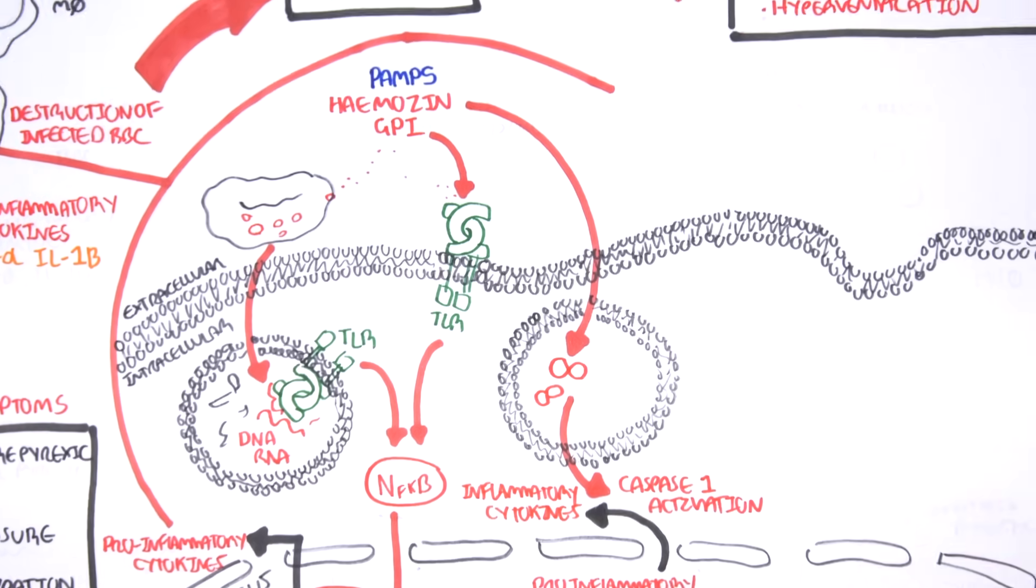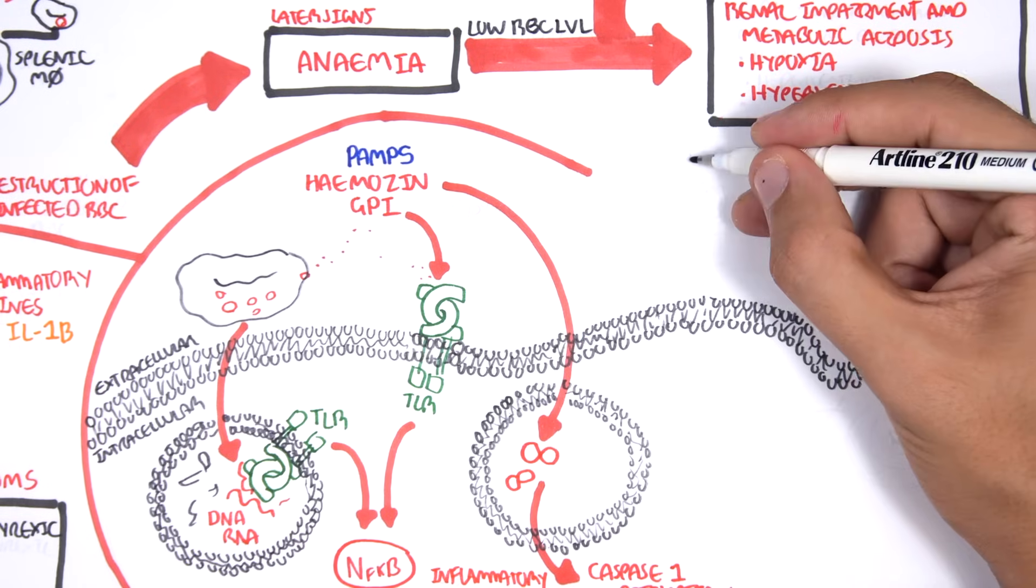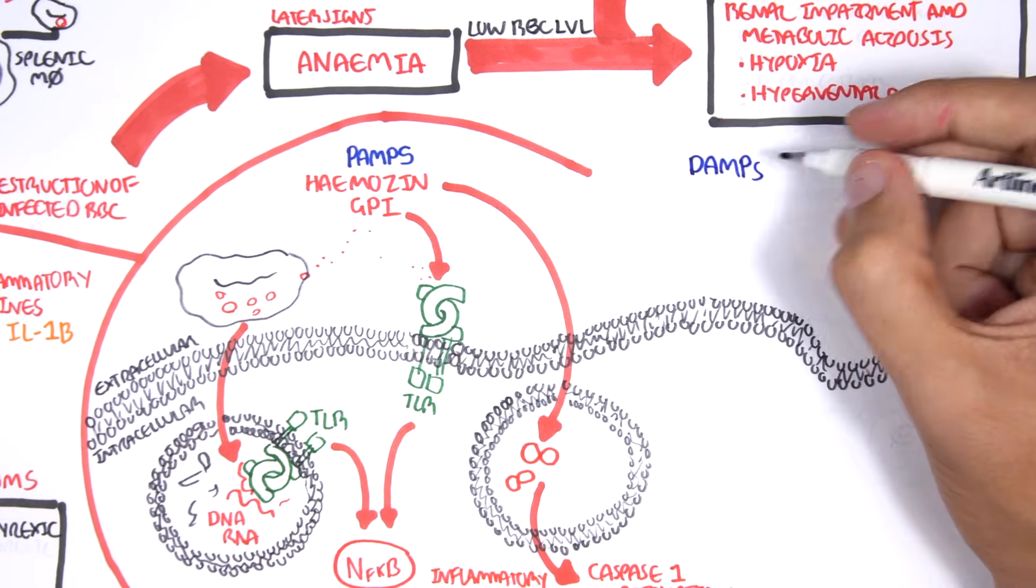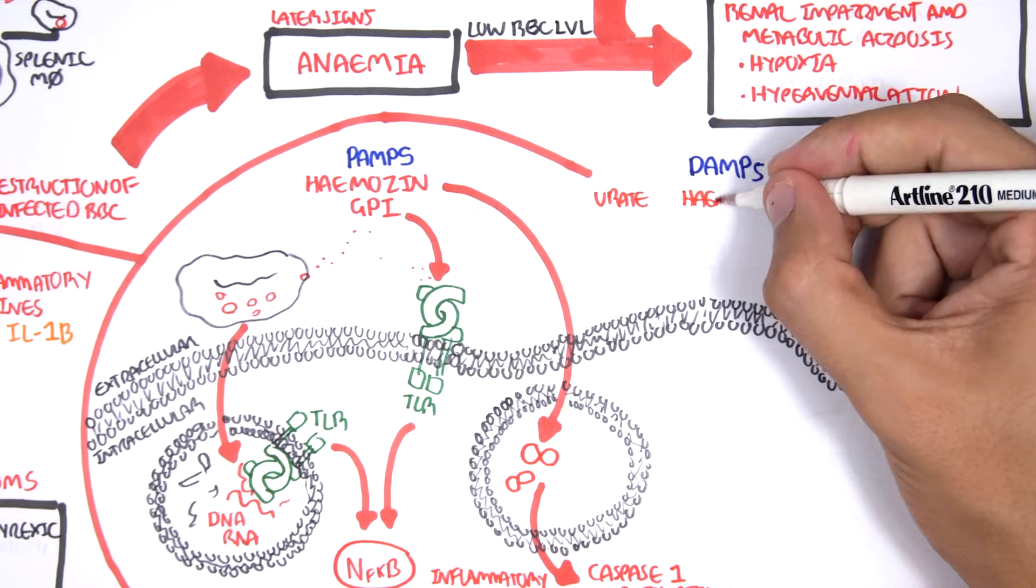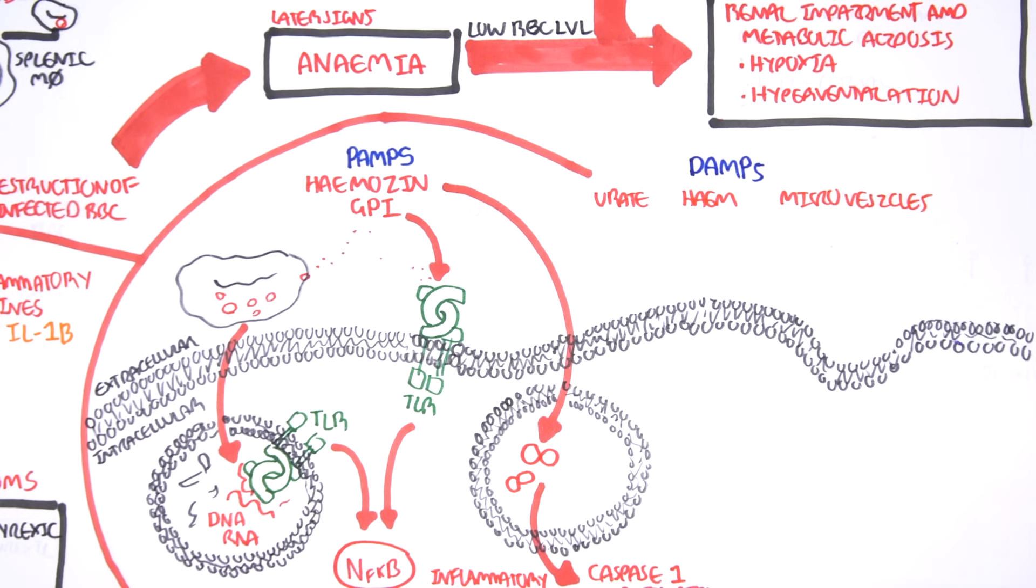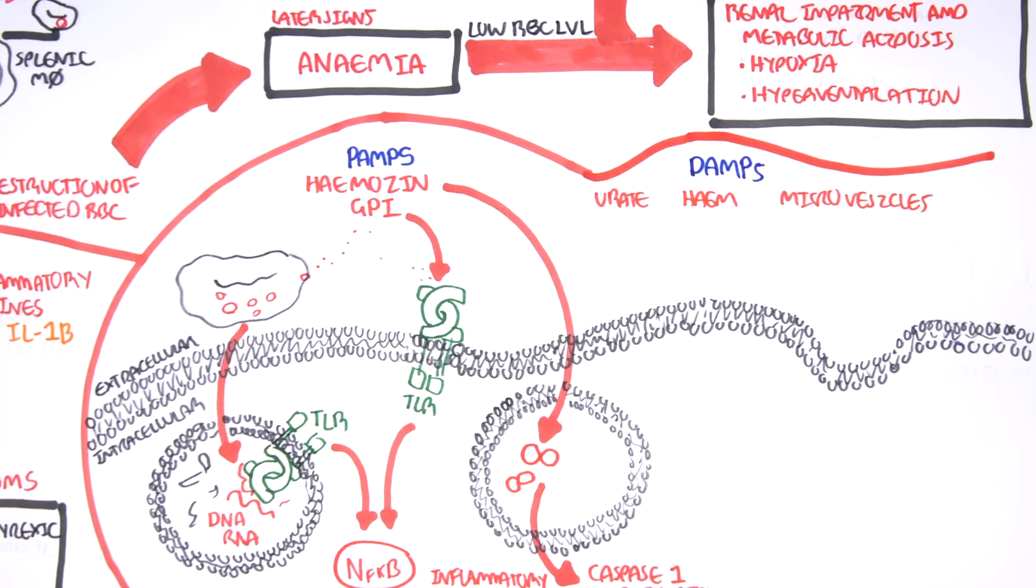So that was talking about PAMPs. There's also another thing called DAMPs, which are damage-associated molecular patterns. DAMPs are endogenous components released from stressed, damaged, or dying cells that can activate toll-like receptors on immune cells. We have three main DAMPs. These are associated with malaria. These are urate, heme, and microvesicles.